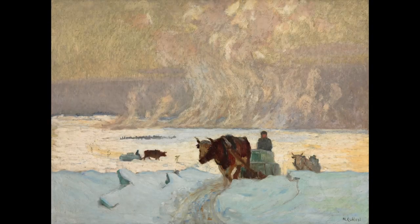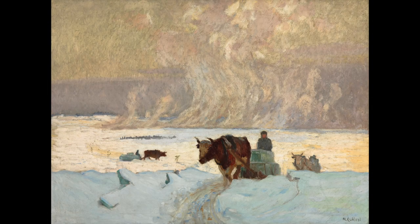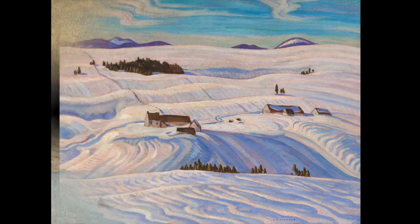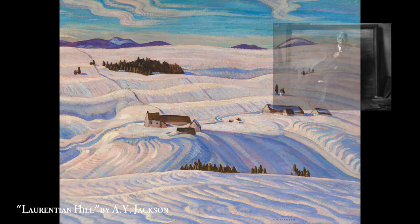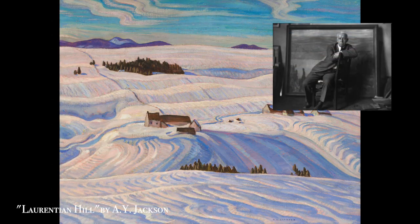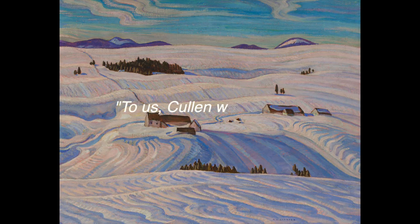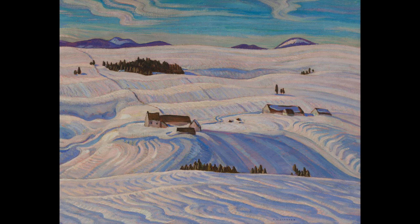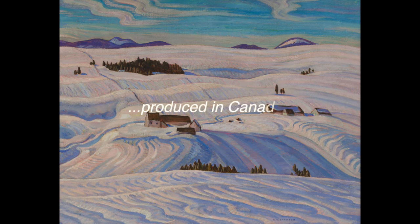Maurice Cullen would have a major impact on artists to come, including Group of Seven member A.Y. Jackson, who commented that, "To us, Cullen was a hero. His paintings of Quebec City, from Lévis and along the river are among the most distinguished works produced in Canada."